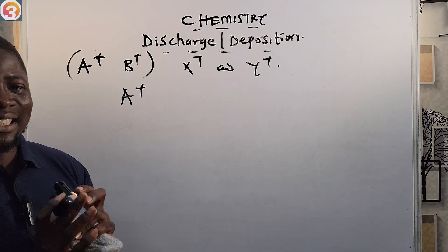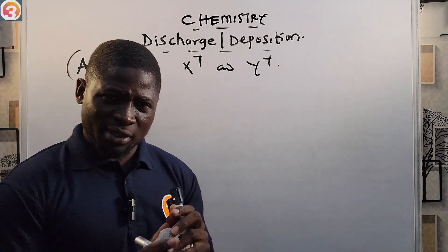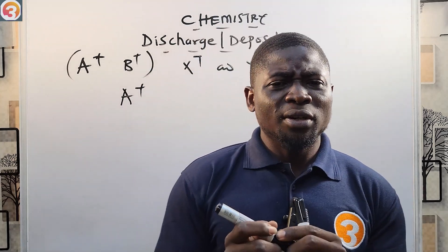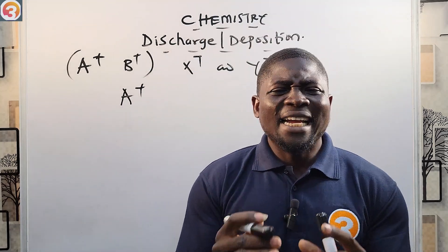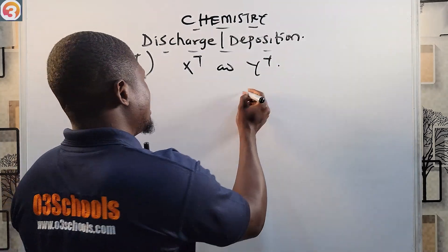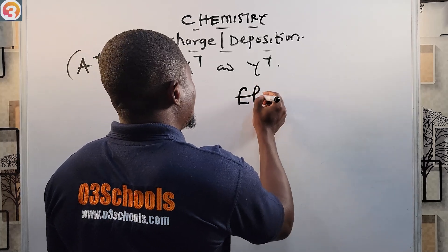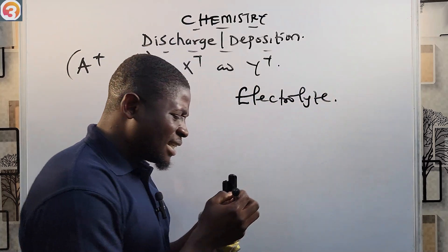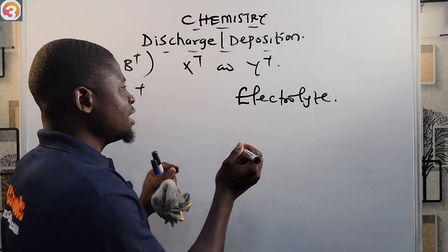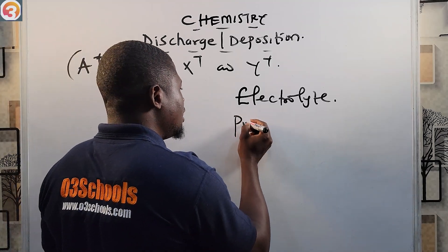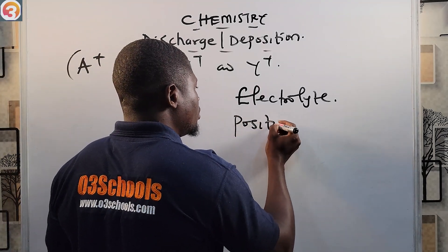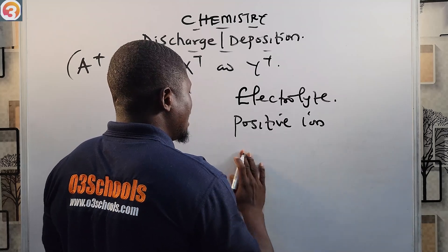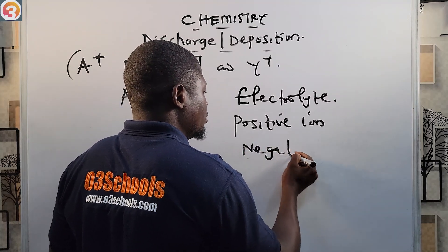Now, during electrolysis, the electrolyte is split into two ions: the positive ion and the negative ion.